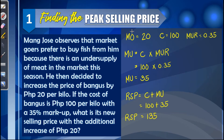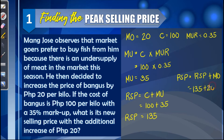Since we are talking about the peak selling price, to get that value we need to add the RSP with the mark on value. So: PSP = RSP + MO. We have 135 plus 20, which gives us a PSP equal to 155. So 155 pesos is the new selling price of the bangus per kilo.